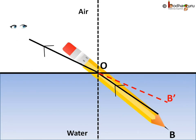Similarly, a ray say BO coming from another part of the pencil in the water, say at the start of the yellow portion, it appears to be coming from point B dash instead of point B.